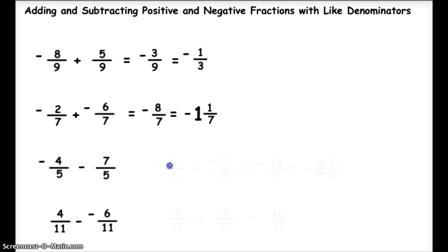That means the first number stays the same. The subtraction is going to change to addition, and the sign of the second number will change. So my addition problem is negative 4 fifths plus negative 7 fifths.